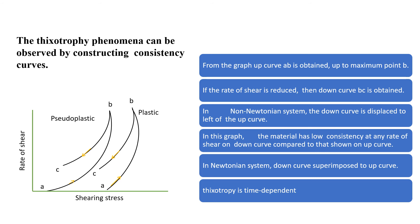In the case of a Newtonian system, the curve will be superimposable. A very important point is that thixotropy is time-dependent, so whether the material is subjected to rest or stress will both affect it. The history of what the material was subjected to will affect the type of rheogram obtained.